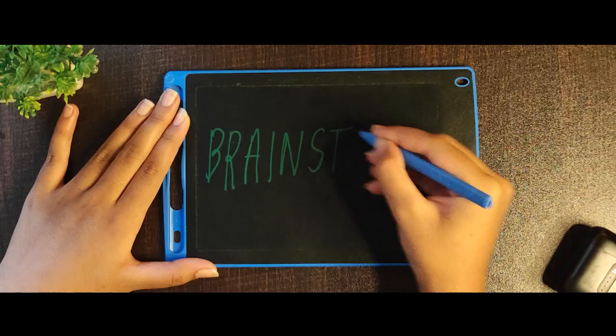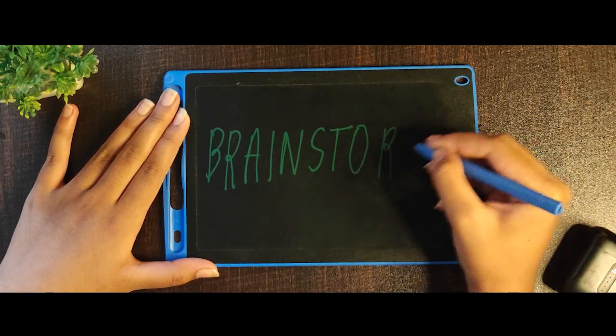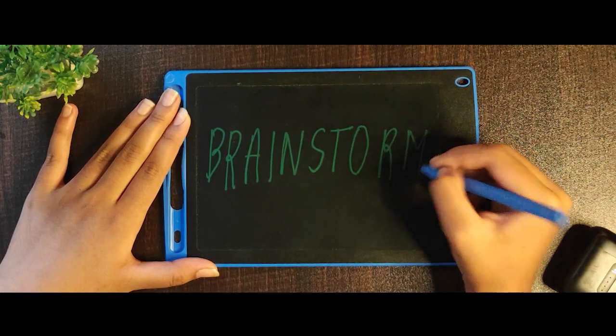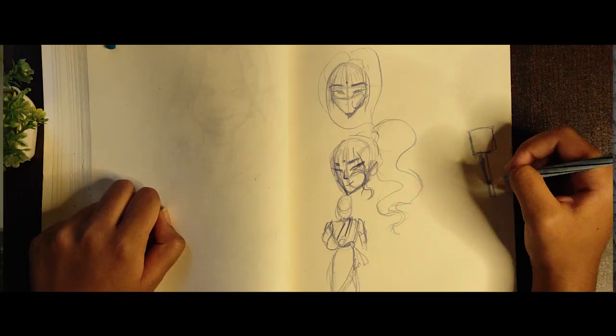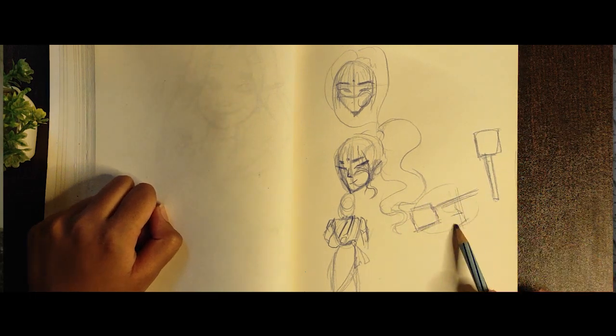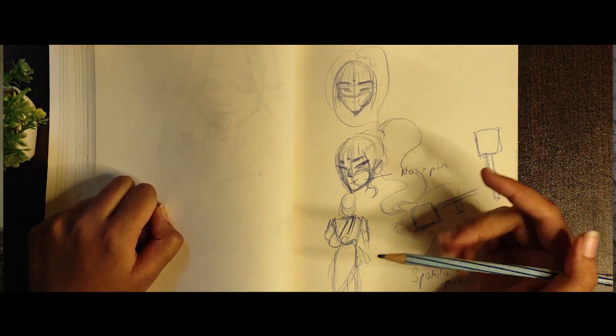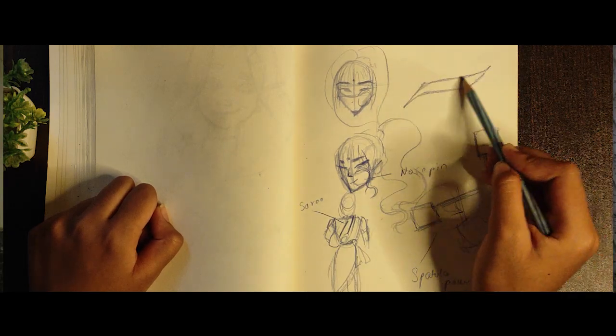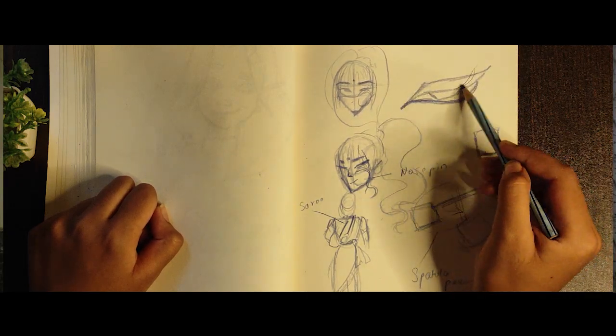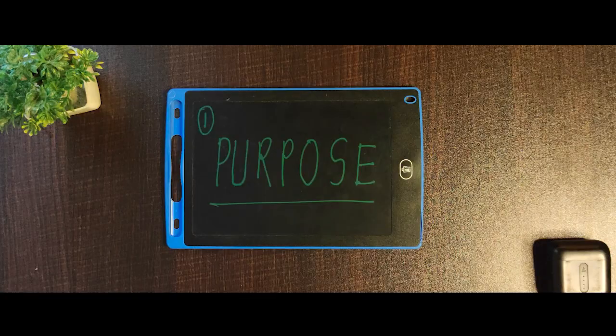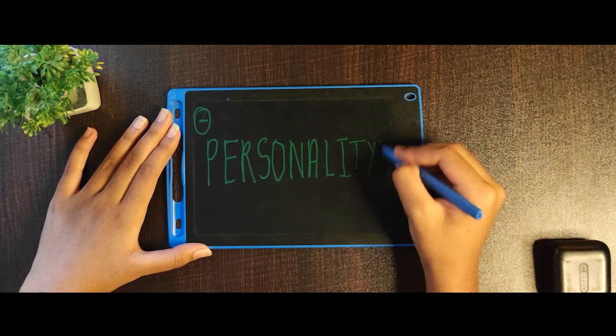The first step of building a character is brainstorming — it's nothing but sketching out the ideas that you have in your mind onto the paper. I like to connect the dots between the character's behavior and different aspects that we need to consider while building a character. Those aspects are purpose, personality,